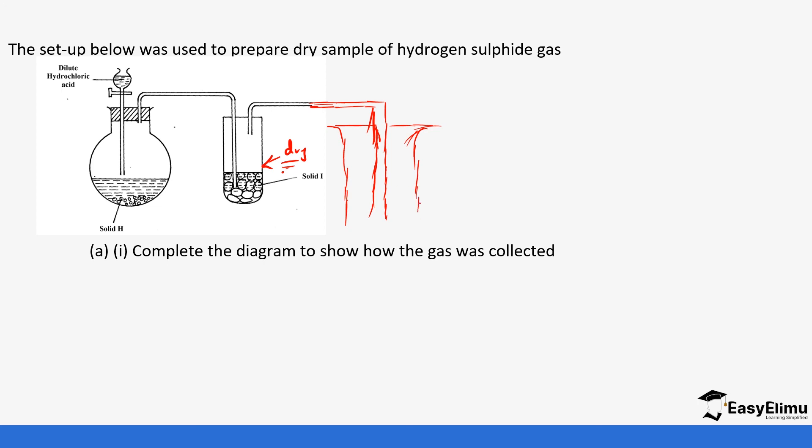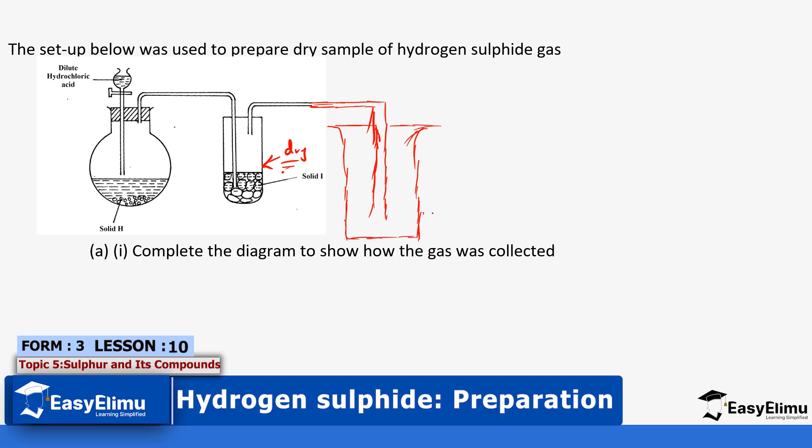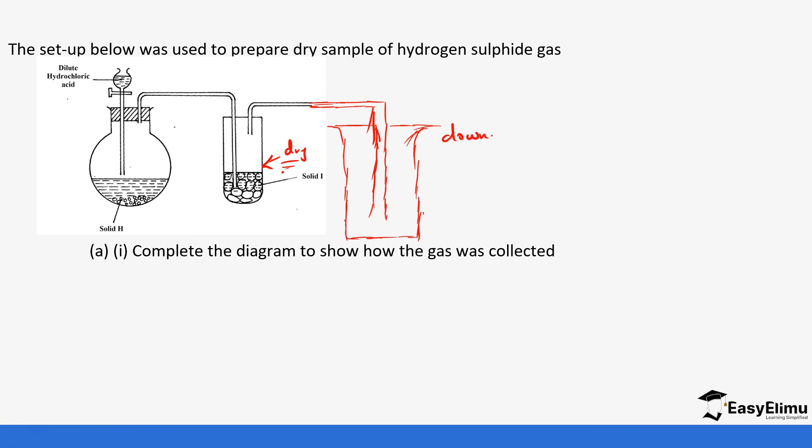We want to collect it by downward delivery because it's heavier than air, so we'll put a tube going downwards. That's how it's supposed to look like. It's being collected by downward delivery because it's heavier than air.